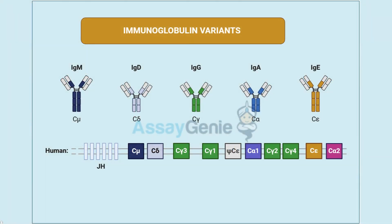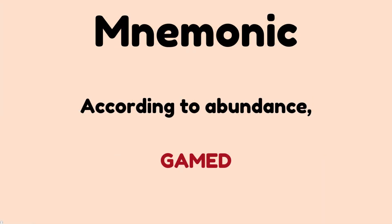We have five immunoglobulins or antibodies, and we will speak about each one with its function. Here is a mnemonic to easily memorize the five immunoglobulins. The mnemonic is given according to abundance, and the word is GAMED. The most abundant immunoglobulin is IgG, and the least abundant is IgD at the end.